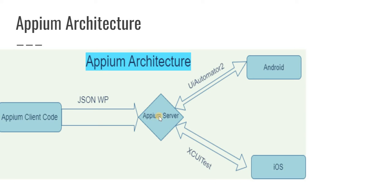In your code you also need to mention what platform you are going to execute your automation on — whether that's Android or iOS. This is called desired capabilities. In the desired capabilities you specify the platform name, your app name, and the root directory of your app. All those things are mentioned as part of your desired capabilities in your client code, and Appium will read that code, follow the instructions, and communicate accordingly.